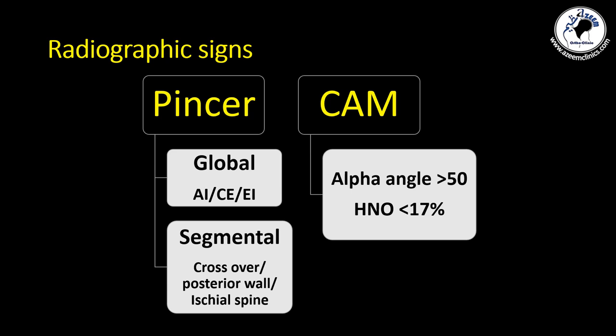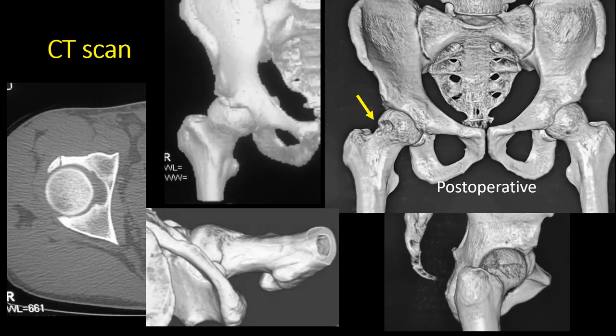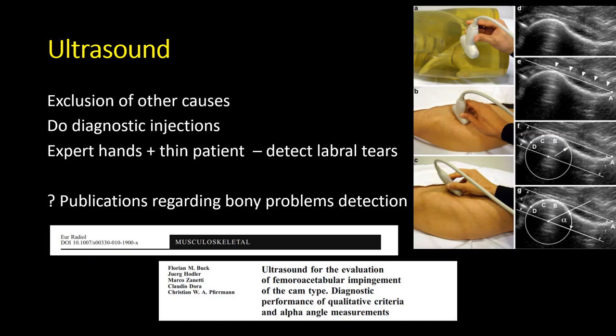These are the radiographic signs used to diagnose pincer and CAM impingement, whether global or segmental, using measurements of the alpha angle in any projection. A CT scan, especially with 3D reconstruction, is very helpful in delineating the extent of the CAM deformity — whether anterior, superior, or both — as well as showing how much of the acetabulum is covering the head and how much the head is sinking inside. I use it regularly to assess how successful my resection of the CAM deformity was, especially postoperatively.